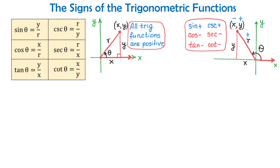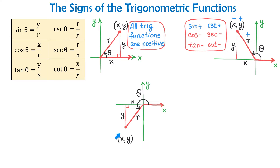Let's have an angle in quadrant 3. Here we have angle theta with the terminal side in quadrant 3, and the terminal side passes through the point x, y. In quadrant 3, both x and y are negative. Let's put a minus sign over each one of them. Then sine of theta is y over r, and negative divided by positive is negative. So in this quadrant, sine and cosecant are negative.